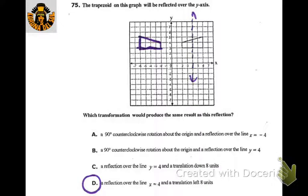The trapezoid reflected over the y-axis would look like the purple one. The other thing that could do it is reflecting it over the line x equals 4 — then you'd still have to move it 8 units over. From negative 4 to 2 is 6 units, halfway is 3, so from negative 4 plus 3 gives negative 1 — that's the halfway point.